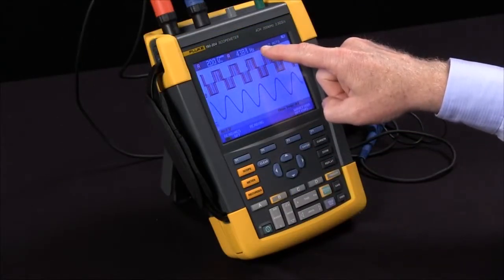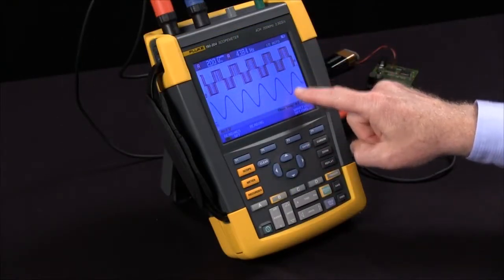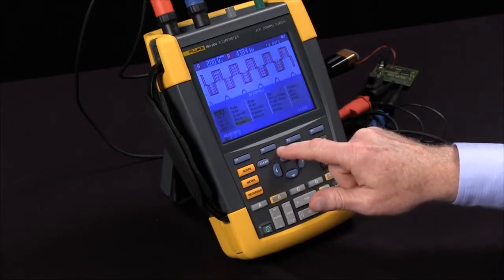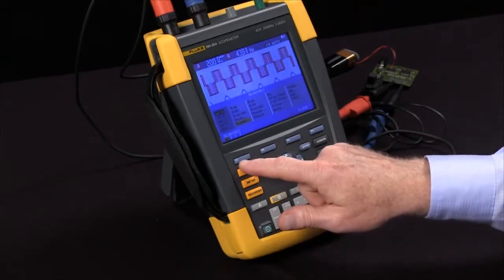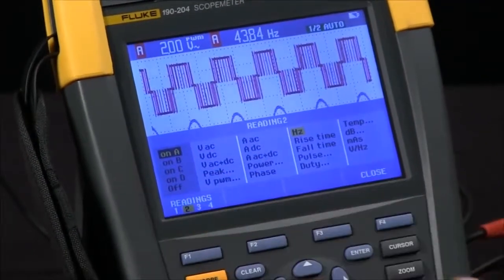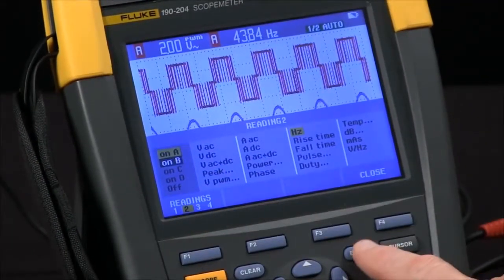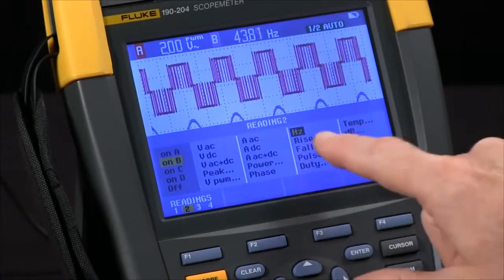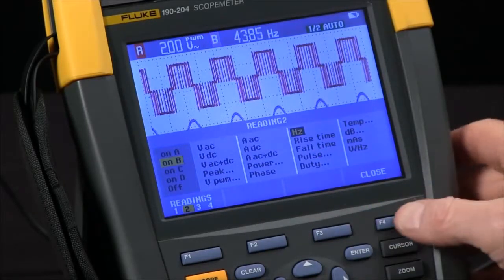I want to make the second reading for channel B. Go to readings again. Press F1 to change to reading 2. Bring channel A down to channel B. Enter. And we'll leave it at frequency. We close that.